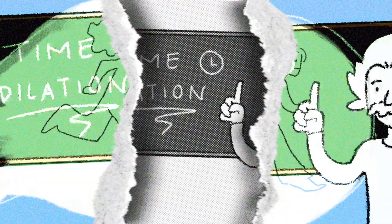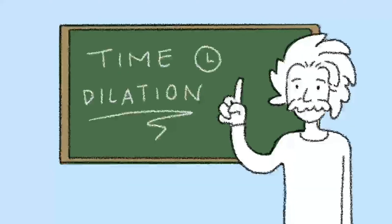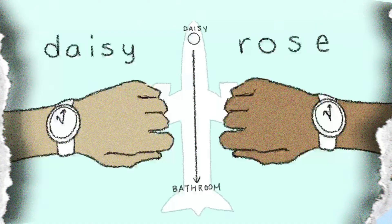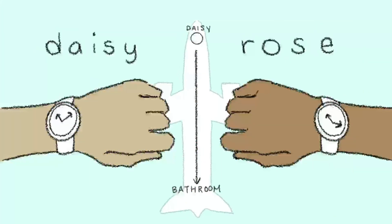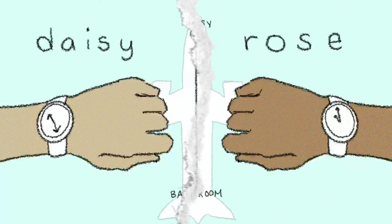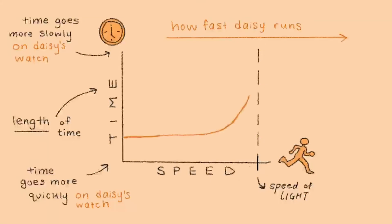In this instance, it's time that must adjust. For Daisy, as she approaches the speed of light, the time around her slows down. This phenomenon is known as time dilation. Essentially, on Daisy's watch, the time it takes for her to cross from one end of the plane to another appears shorter than the time reported on Rose's. And as Daisy speeds up, time around her gets slower and slower and slower.